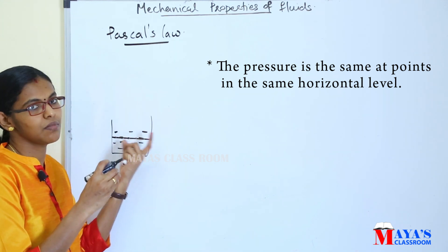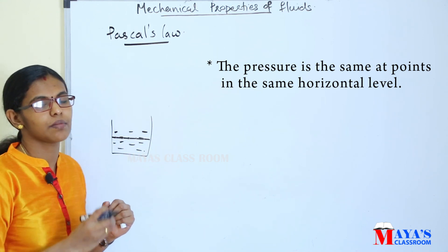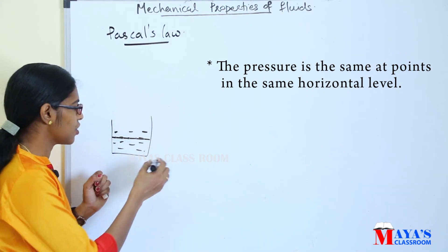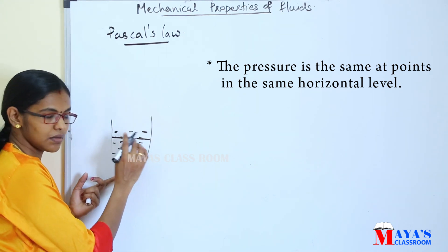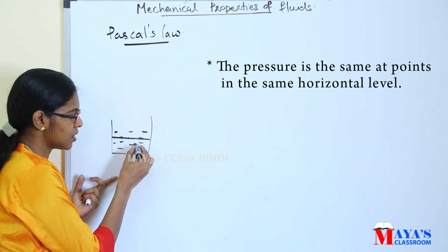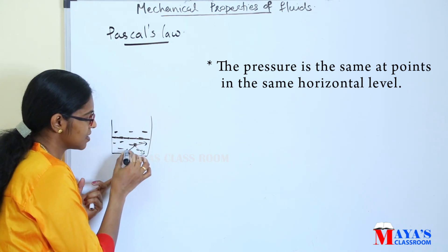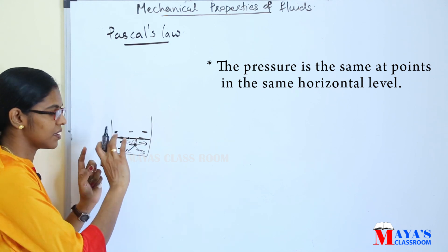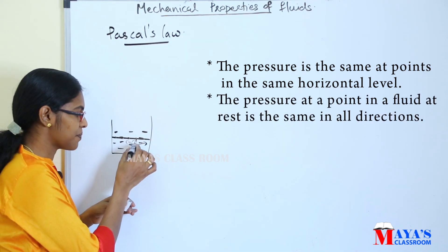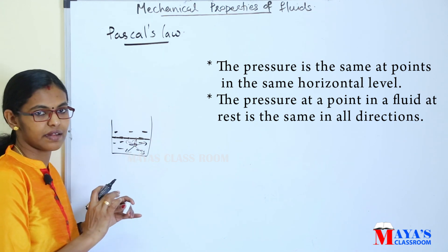The pressure is the same at points in the same horizontal level. At the same horizontal level, all points are marked and exert the same pressure. The pressure at a point in the fluid at rest is the same in all directions.